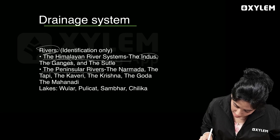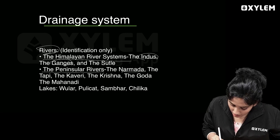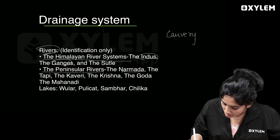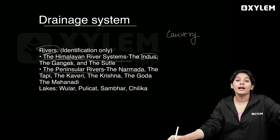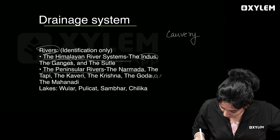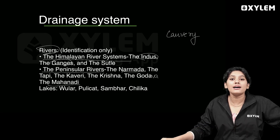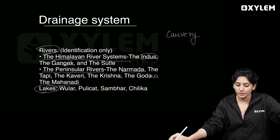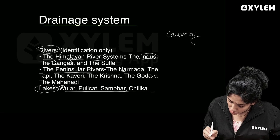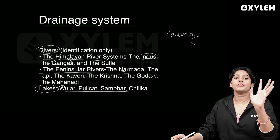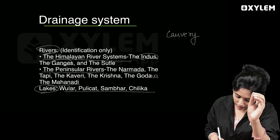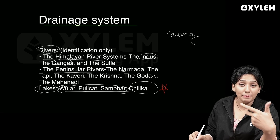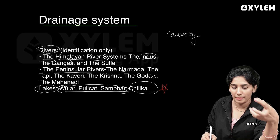Then the peninsular rivers: Narmada, Tapti, Kaveri, Krishna, Godavari, and Mahanadi. These are important peninsular rivers to locate. Also, Chilika Lake is very important and should be marked on the map.